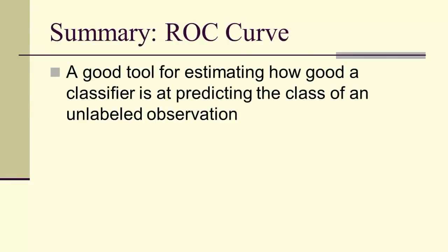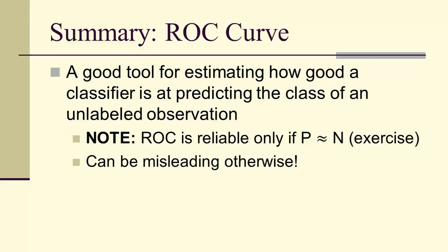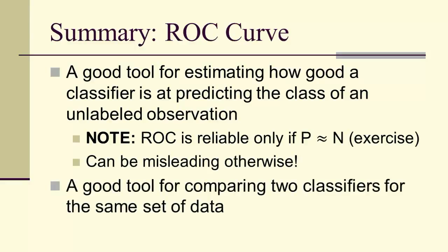In summary, receiver operating characteristics are a good tool for estimating how good a classifier is at predicting the class of an unlabeled observation. The ROC and its area under the curve are really only reliable if the number of positives is about the same as the number of negatives — otherwise it can be misleading. The ROC is also a good tool for comparing two classifiers on the same set of data.